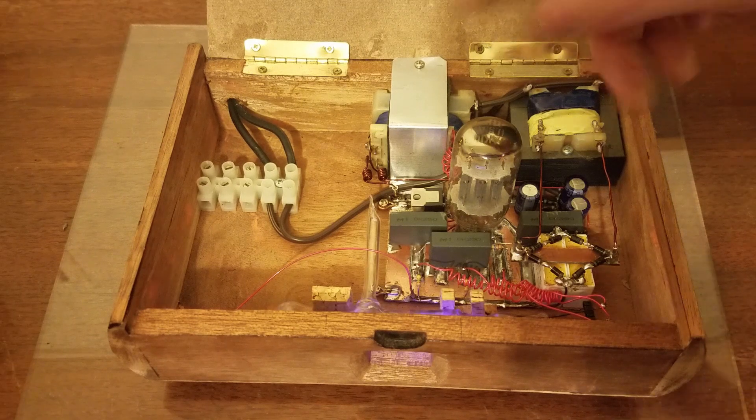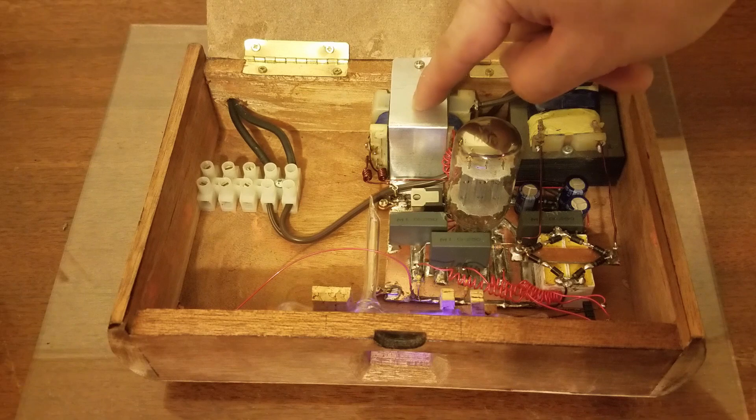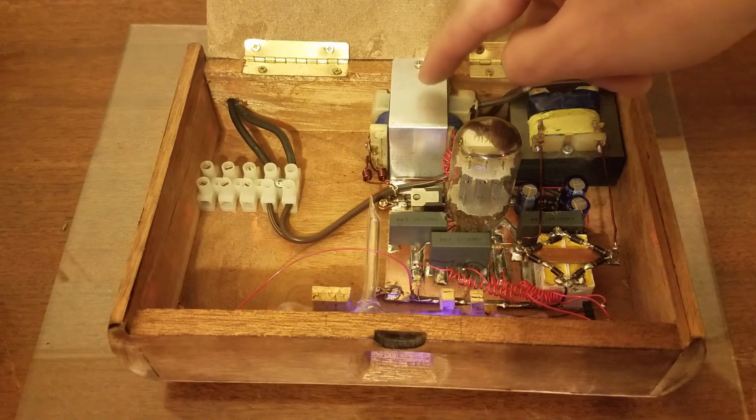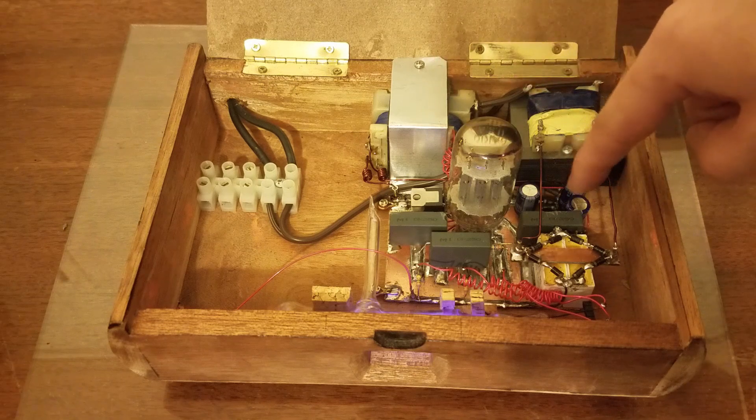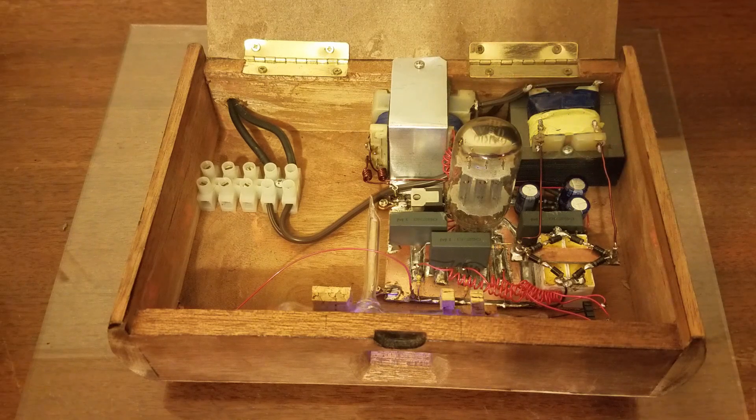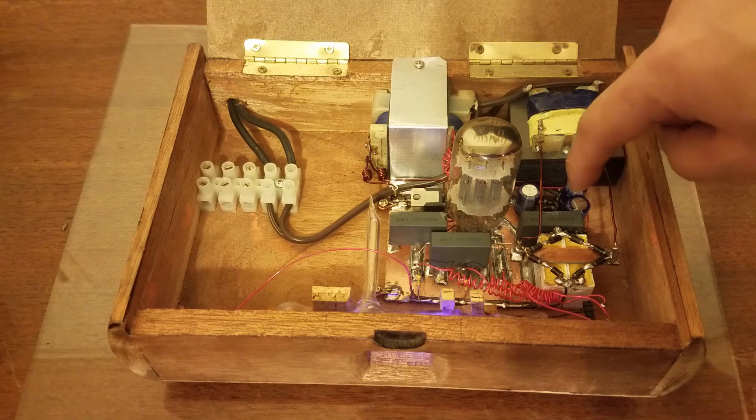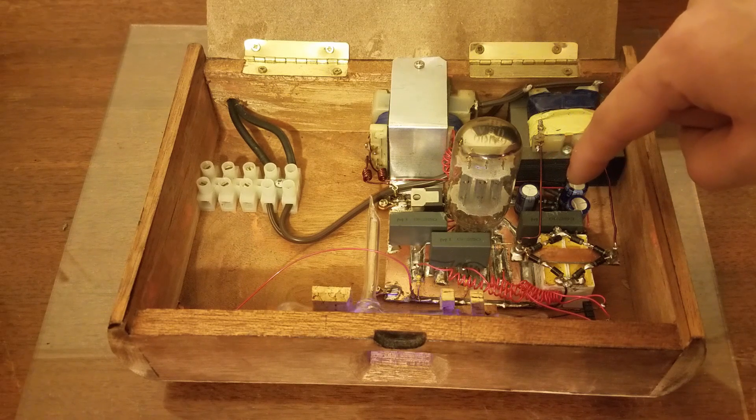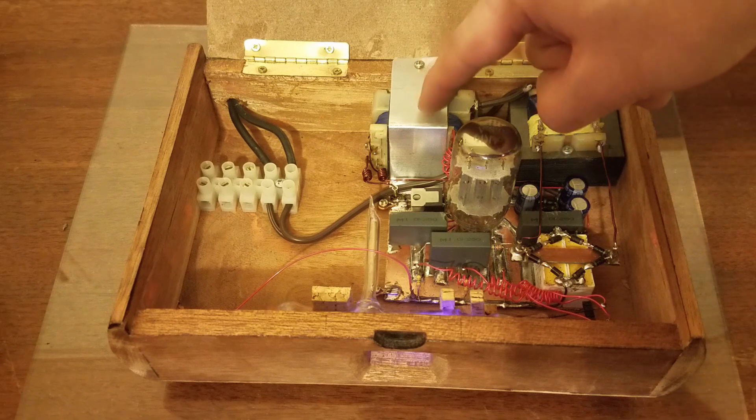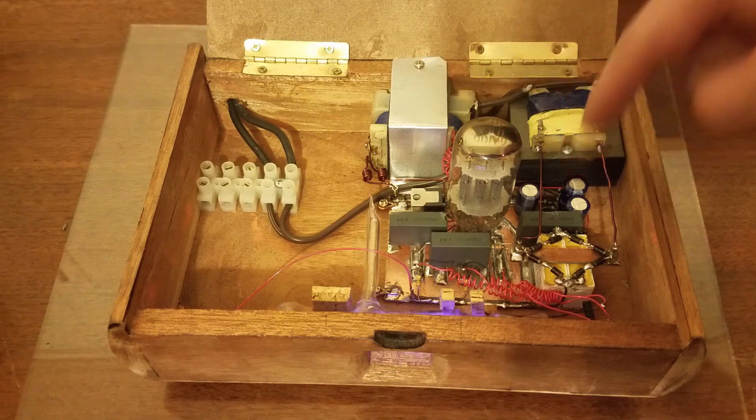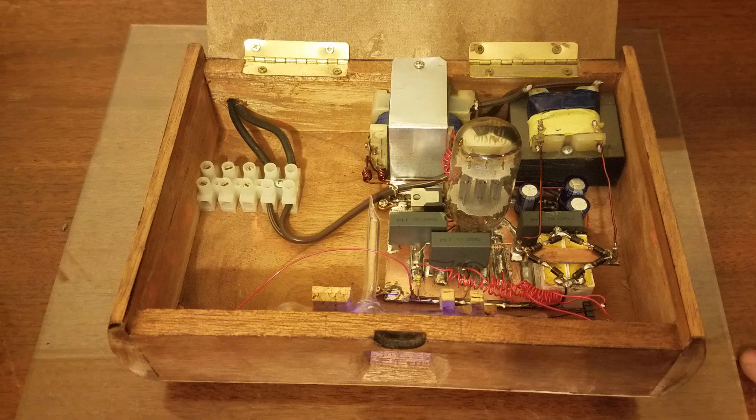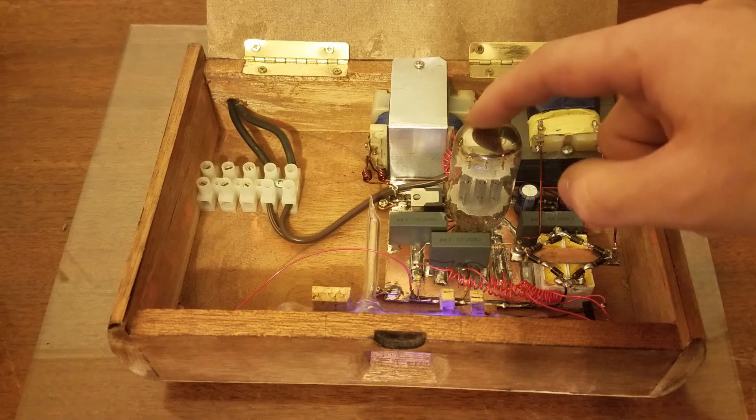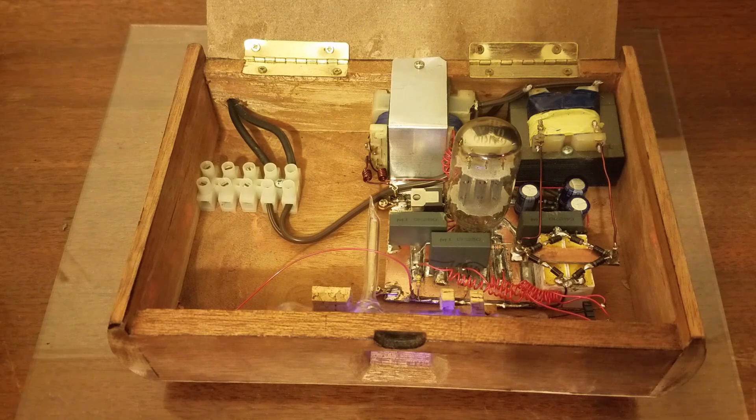We have the second transformer right here, which provides the filament voltage for the tube and also about 12 volts AC to feed this voltage multiplier. This right here is basically just a three stage voltage multiplier, which takes the 12 volts AC and multiplies it to about negative 52 volts DC. And that gives the tube the correct bias it needs to function.